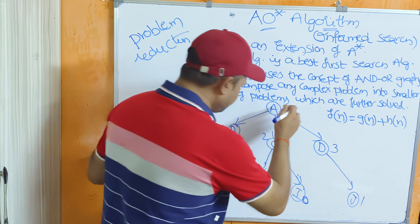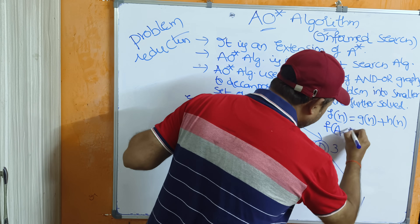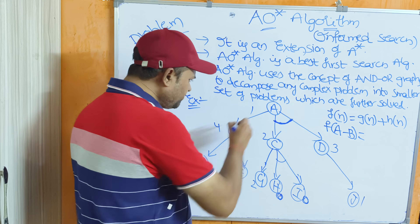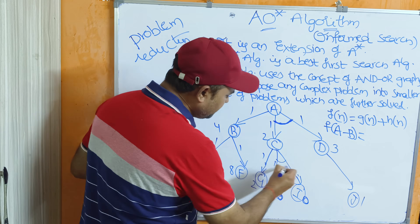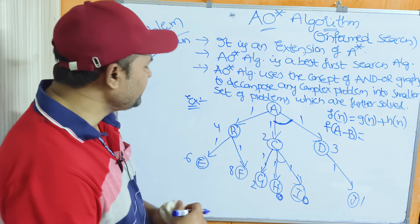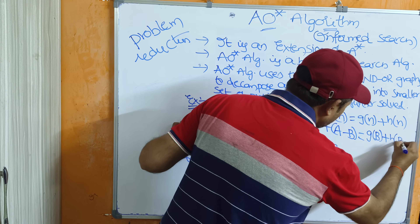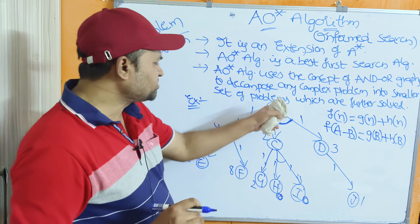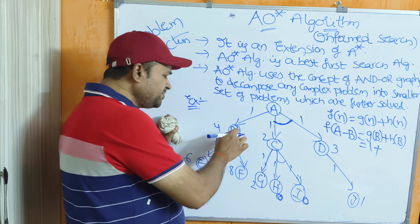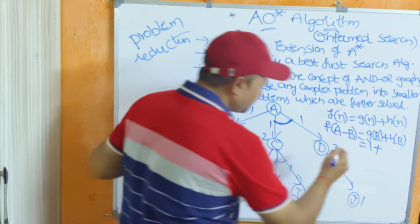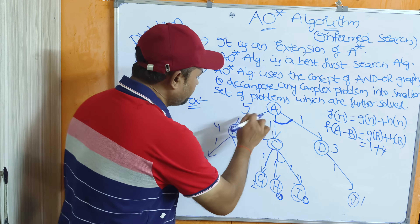Starting from A: F(A→B) = G(B) + H(B). The edge cost from A to B is 1, so G(B) = 1. H(B) = 4. Therefore F(A→B) = 1 + 4 = 5.